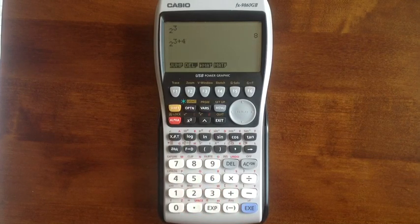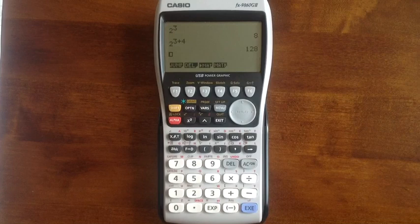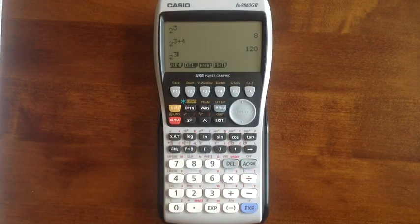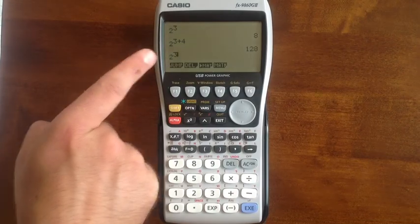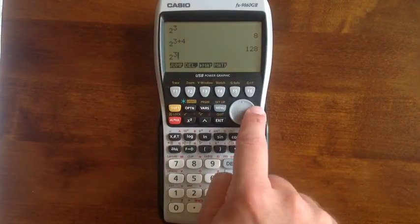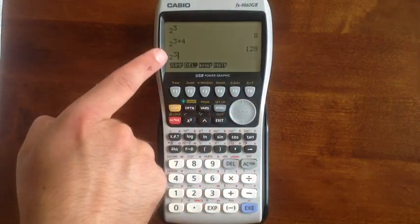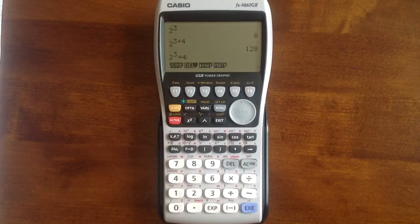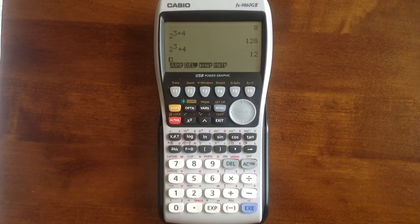If we wanted to do something like 2 to the power of 3 plus 4, if I just type those buttons in, it will understand that as being 2 to the power of 7. If I wanted 2 to the power of 3 plus 4, I need to make sure that the cursor appears in the correct place. So pressing right on this directional pad will make the cursor appear bigger. Moving it down, I can then type in the rest of my line. There is our answer.